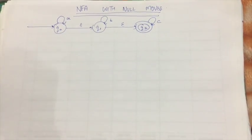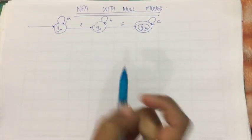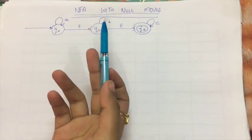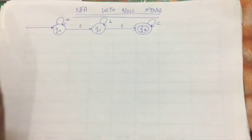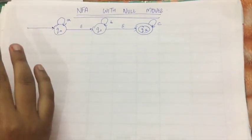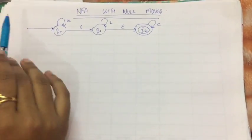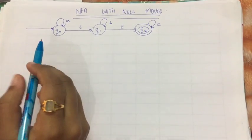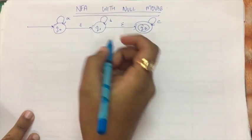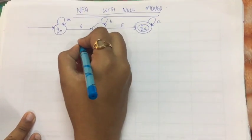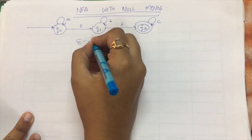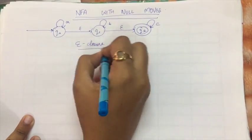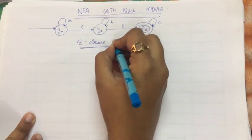Today we are going to study the conversion of an NFA with null moves to an NFA without null moves. For this, we should know two terms: what are null moves, and what is an E-closure, or the null closure, of a state.